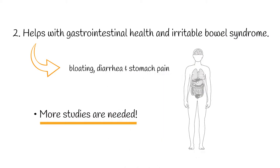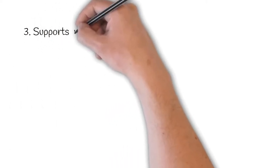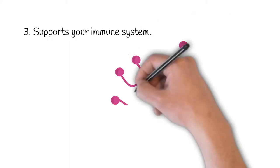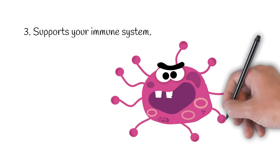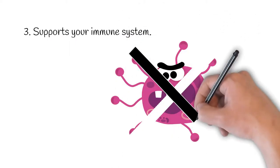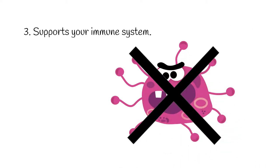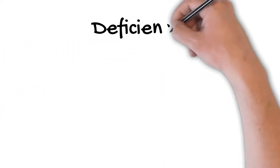And the third benefit is that it supports your immune system by boosting cell activity and helping to prevent inflammation. Now in most cases our body produces enough glutamine. However it could happen that this is not the case and this can lead to deficiency.